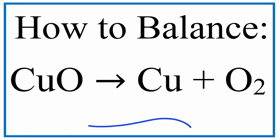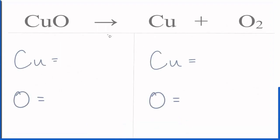To balance this equation, copper 2 oxide yields copper plus oxygen gas. Let's count the atoms up on each side.